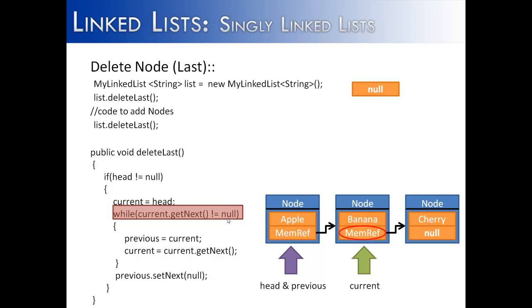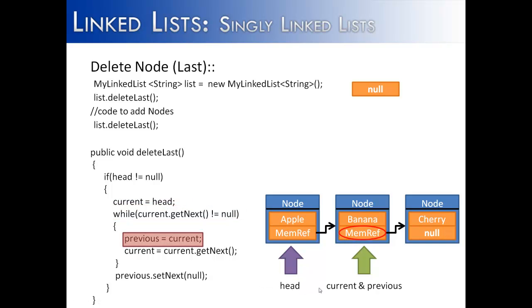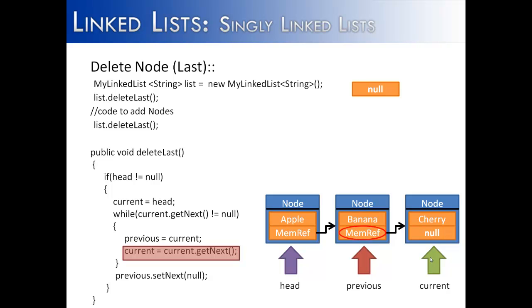Next, we check if we stay in the while loop. As long as current.getNext is not equal to null, we continue. Previous moves to where current was, so current and previous now reference the same node. Current is then assigned current.getNext, which references the cherry node. We check the loop again — current.getNext is equal to null, so the condition is false and the loop stops.